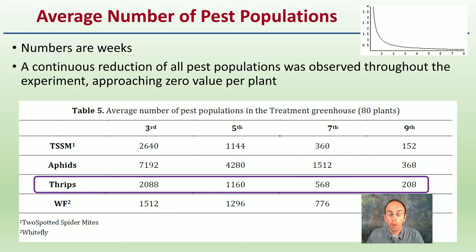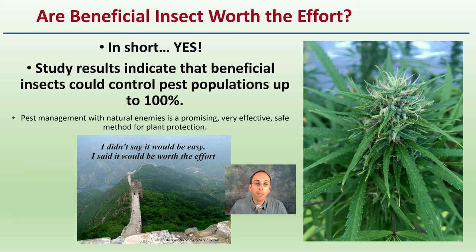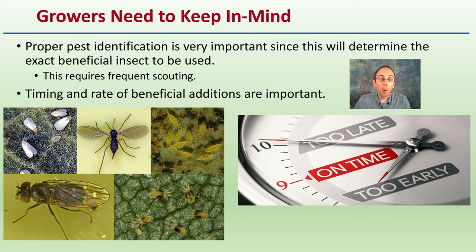Are beneficial insects worth it? In short, yes. Study results showed that beneficial insects could control pest populations up to 100%. Pest management with natural enemies is a promising, very effective, and safe method for both plant protection and applicator protection. Keep in mind that proper pest identification is important, since this determines the exact beneficial insect to use, and this requires frequent scouting. Timing and rate of beneficial additions are important, and contacting the supplier of the beneficial insects can help you develop a plan that effectively controls pest populations while minimizing negative environmental impacts.